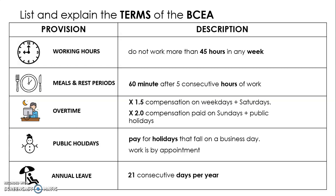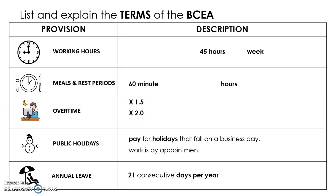The last image is a person lying on a lounger under an umbrella. Every year we get a summer holiday, so hopefully this image will remind you of yearly leave or annual leave. Next, we need to cover up our facts. We are left with 45 hours and week, 60 minutes and hours, 1.5 and 2, pay and holidays, and 21 days per year.